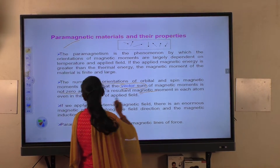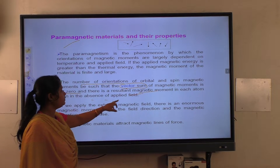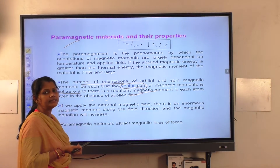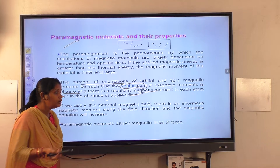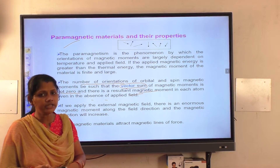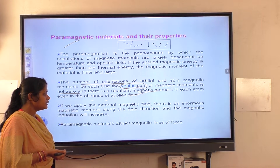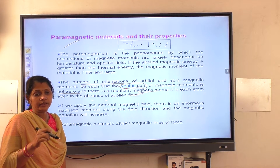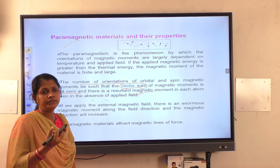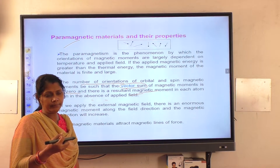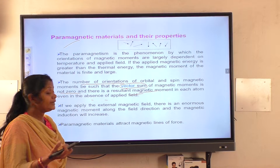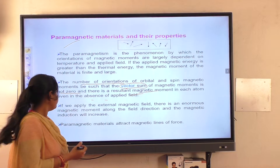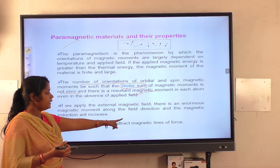When we apply an external magnetic field, there is an enormous magnetic moment along the field direction and the magnetic induction increases. In paramagnetic materials, there is a force of attraction between the applied magnetic field and the induced magnetic moment. Paramagnetic materials attract magnetic lines of force.